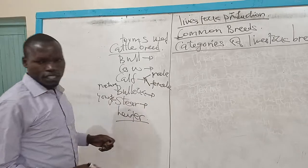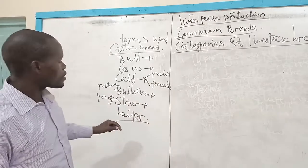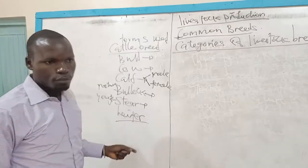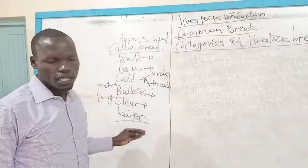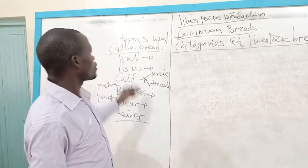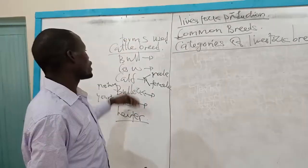We also had another term like a heifer. A heifer is a female cattle between weaning and the first calving. These are some of the terms which we looked at in our previous lesson.